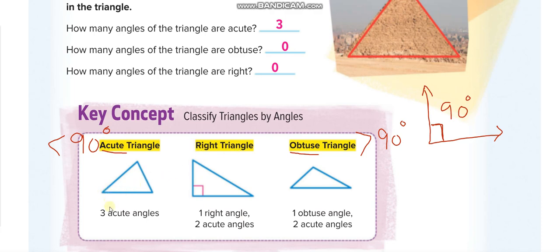When all three angles in your triangle are acute — all less than 90 degrees — you can see each angle's line falls inside the straight 90-degree reference line. All three angles are acute in this triangle, so we call it an acute triangle.